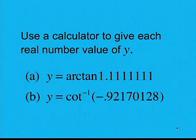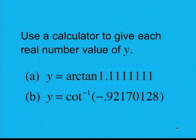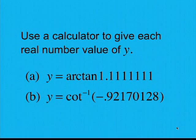Now it's time for you to try two problems. Use a calculator to give each real number value of y. A: y equals arctan of 1.111111. And B: y equals inverse cotangent of negative 0.92170128. Pause the video while you work on these problems using your calculator. When you're finished, restart the video to check your solution.